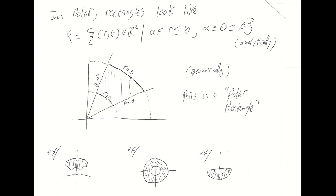Here are some examples of polar rectangles. One has theta going from about pi over 4 to 3 pi over 4 with an inner and outer circle bounding r. A washer-looking shape called an annulus is also a polar rectangle — r going from a small value to a large value, theta going from 0 to 2 pi for full rotational symmetry. Another polar rectangle has theta going from pi to 2 pi with r going from some small value to a larger value, giving the lower half of an annulus.